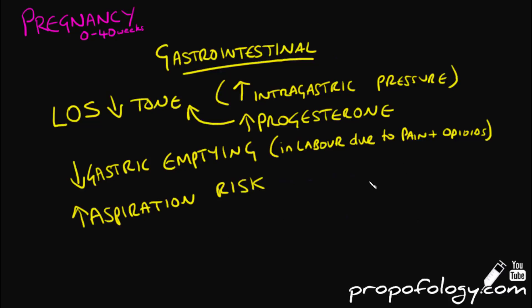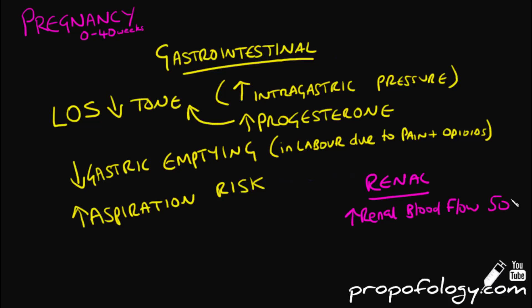Renal blood flow and glomerular filtration rate increase in pregnancy by up to 50%. Urea and creatinine levels reduce, meaning that a normal creatinine level in pregnancy is actually abnormal. Glycosuria and proteinuria are also common.